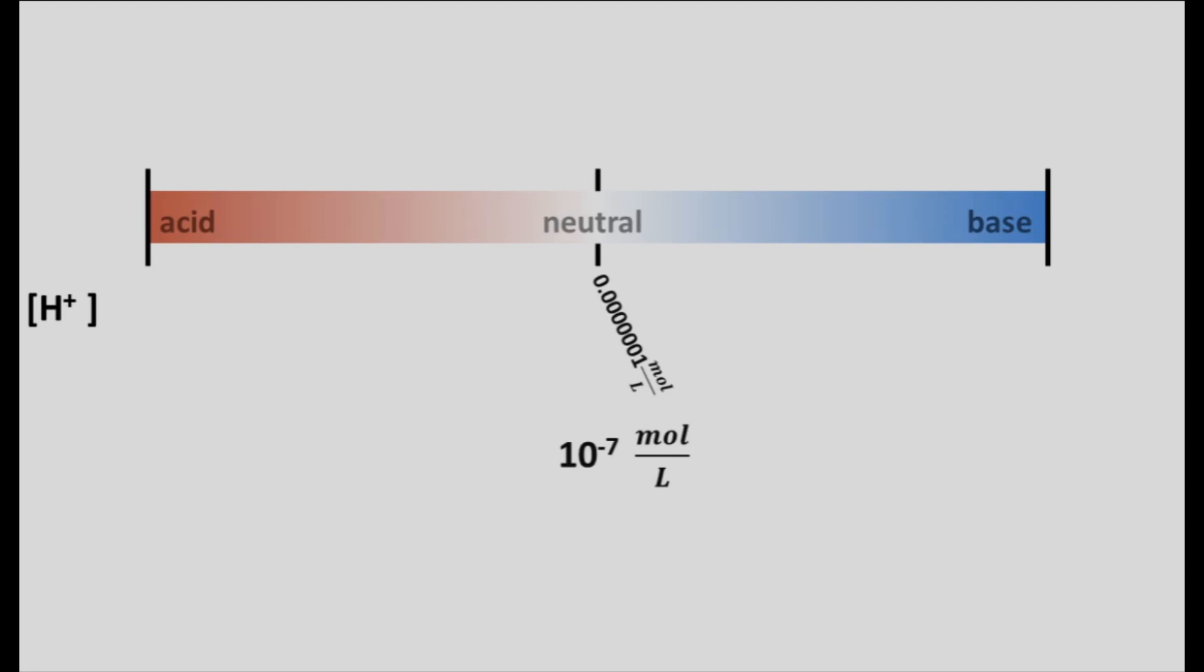If we remove as many protons as we can from the solution, we end up with a much, much smaller number. This is also hard to write. So we use the exponents, and this is 10 to the negative 14th moles per liter concentration.